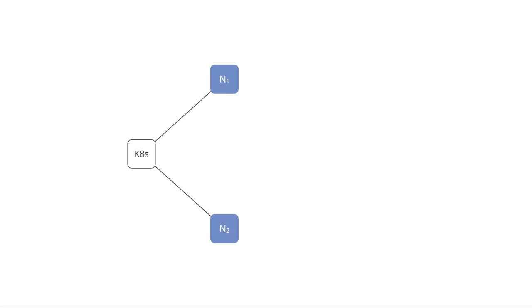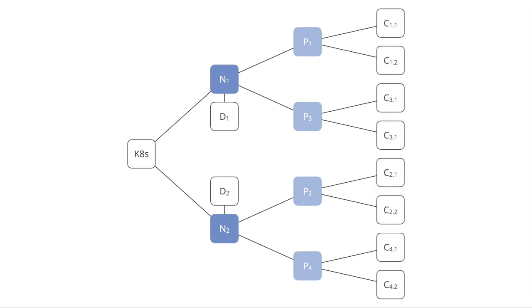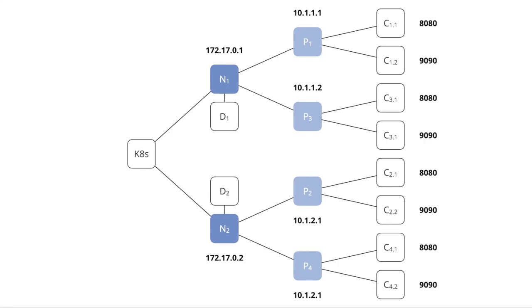We will use a simple Kubernetes cluster as an example. The cluster consists of two nodes, n1 and n2. Each node hosts a daemon — for example, the kubelet — d1 and d2. Additionally, each node hosts two pods: p1 and p3, as well as p2 and p4. Each pod executes two containers. Elements with an IP address consist of nodes and pods. In this example, the first container of each pod listens on port 8080, and the second container of each pod listens on port 9090.